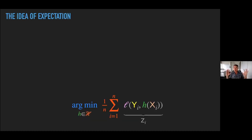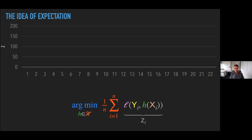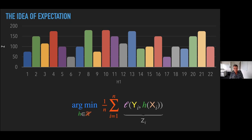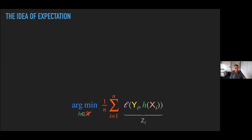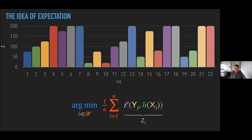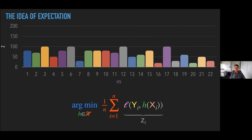Let's remind ourselves of the basic idea of expectation. For each choice of hypothesis you end up with, for each data point, values of that random variable. And then you optimize over H — you change different Hs and things change. Eventually your algorithm converges and you choose H5. Why did you choose that? Because on average these numbers are smaller. Smaller is better; loss is bad. Just keep that visualization in mind.